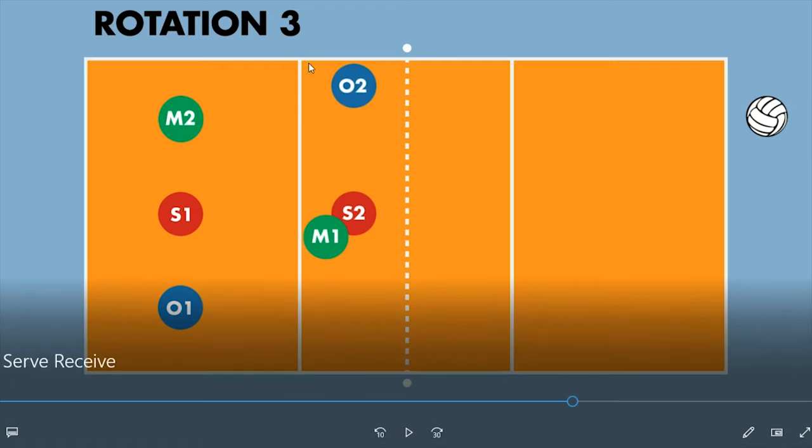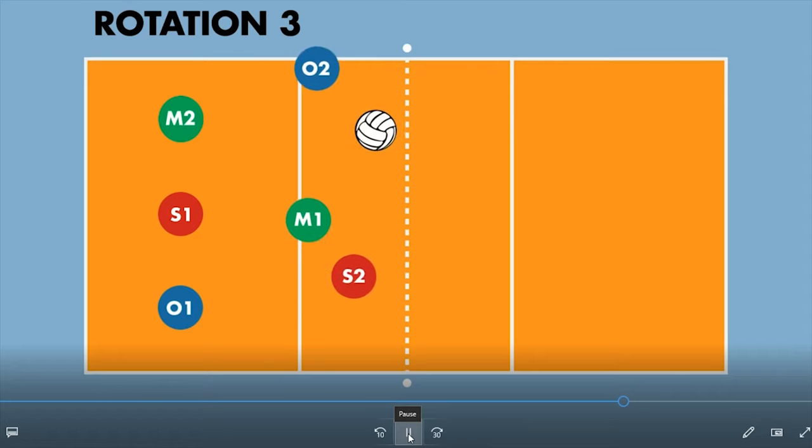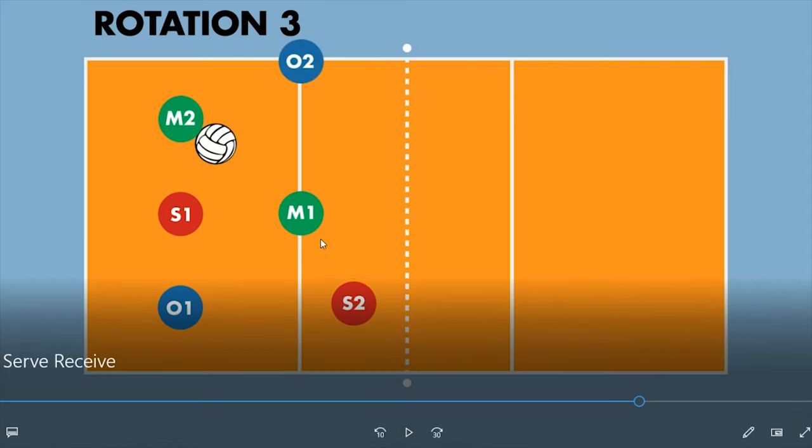Now if you want, you can pull the outside all the way back here. Sometimes they just happen to get in the way. So I'm just, for demonstration purposes, keeping it right here. Your middle, once again, closest to the 10-foot line to get ready to attack. And then this is what the transition looks like. Easy peasy. Rotation 3 is pretty straightforward. Middle and outside are almost always in place.